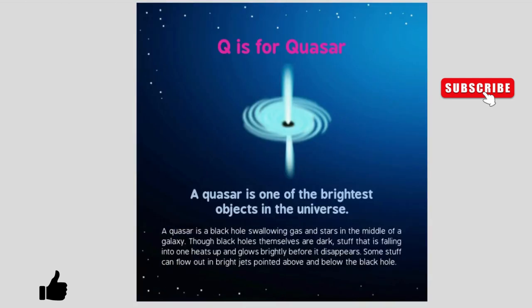Q is for Quasar. The quasar is one of the brightest objects in the universe. A quasar is a black hole swallowing gas and stars in the middle of a galaxy. Though black holes themselves are dark, stuff that is falling into one heats up and glows brightly before it disappears. Some stuff can flow out in bright jets pointed above and below the black hole.